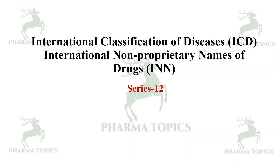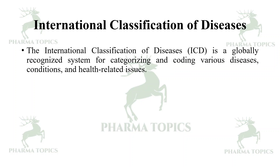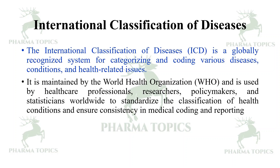First, let us see what is International Classification of Diseases. The International Classification of Diseases is a globally recognized system for categorizing and coding various diseases, conditions, and health-related issues. It is maintained by the World Health Organization and is used by healthcare professionals, researchers, policy makers, and statisticians worldwide to standardize the classification of health conditions and ensure consistency in medical coding and reporting.